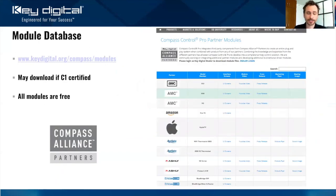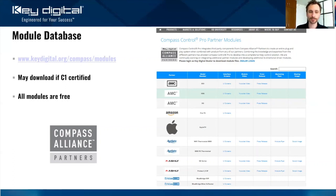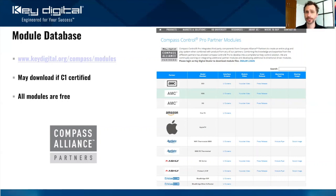The webpage to view all modules is keydigital.org/compass/modules. Even if you're not C1 certified, you can view the list and take a look at screenshots. To download the modules themselves, you need to be C1 certified. Once you are, the webpage adds columns for the module download as well as the module programming guide, which teaches you how to collect any additional information needed from the device you're controlling.